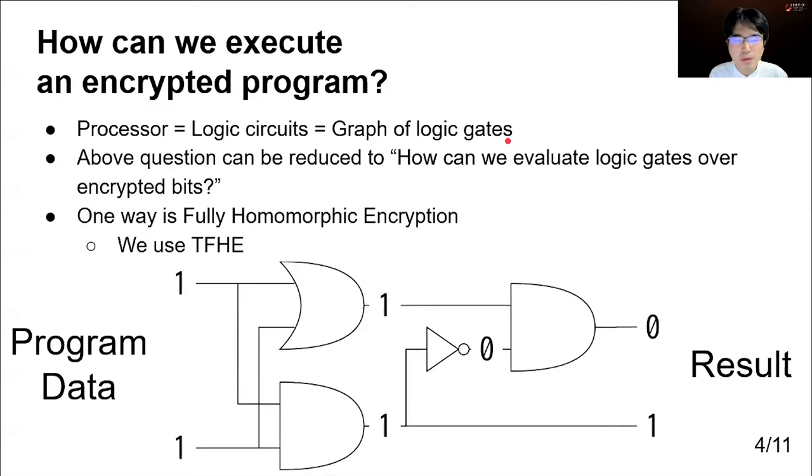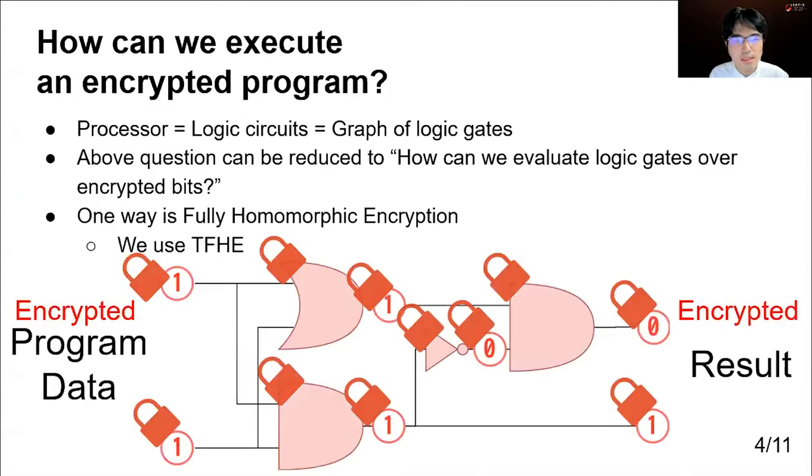Logic circuits can be represented by a graph of logic gates. So, the question of how can we execute an encrypted program can be reduced to an easier question: How can we evaluate logic gates over encrypted bits? This is because if we can evaluate logic gates over encrypted bits, we can replace each physical logic gate with them, and this gives a way to evaluate logic circuits over encrypted bits.